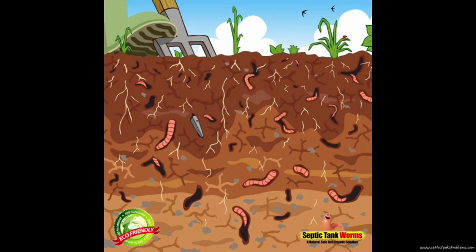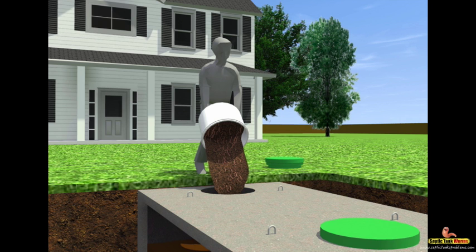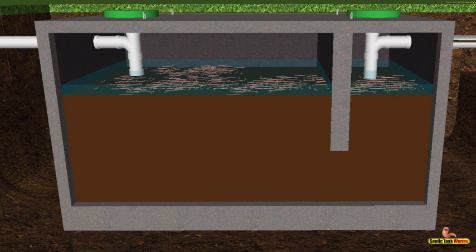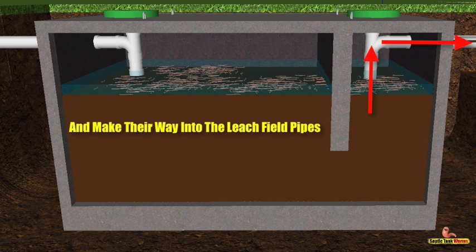For thousands of years, worms have been living underground, eating rotten and decaying waste and converting it into clean organic matter. Step one: once you've received your bucket of worms, simply remove the lid off the septic tank, remove the lid off the bucket of worms, and pour the worms and bedding into your septic tank. The worms will settle on top of the sludge and very quickly start to do their job — breeding, multiplying, burrowing into that sludge, and making their way through the pipes toward the drain field.